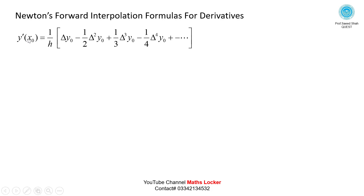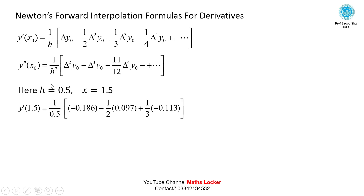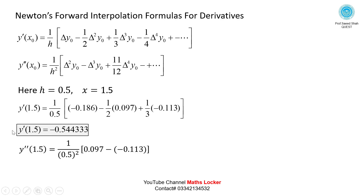Applying the first derivative formula and substituting the differences and h = 0.5, with x = 1.5 and x₀ = 1.5, simplify to get f'(1.5). Similarly, apply the second derivative formula, substituting x - x₀ and the differences, to obtain f''(1.5).